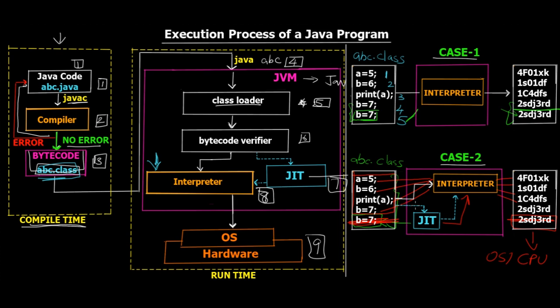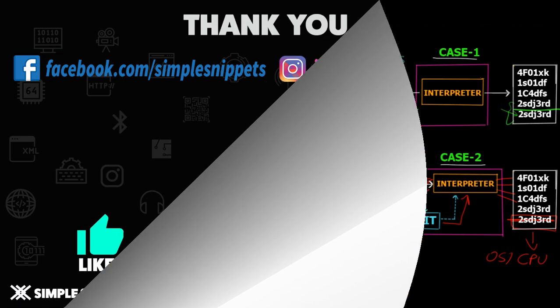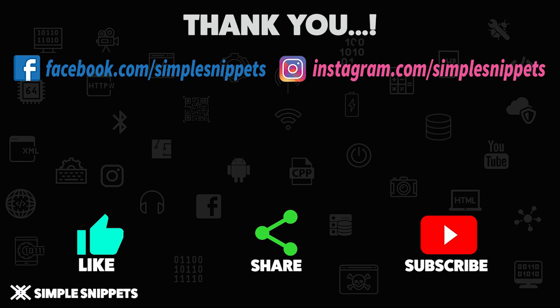So that's the theory on the Just-In-Time compiler, and we've also seen the entire execution process through these nine steps. This is a very important topic because it's one of the most frequently asked questions in interviews and exams. You won't see this happening in real time when coding, but it's what happens behind the scenes. If you liked this video, give it a thumbs up, share it, and subscribe to the channel for more tutorials. I'll talk to you guys in the next video — peace!